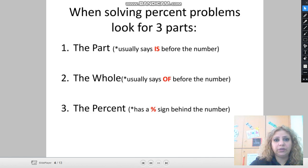The part usually says 'is' before the number. These are some hints for you to know when solving percent problems. You have to look for three parts. The part usually says 'is' before it. The whole usually says 'of' before the number. So the whole number comes after the word 'of'. And the percent comes before the percent sign.